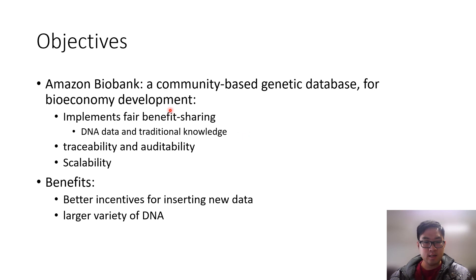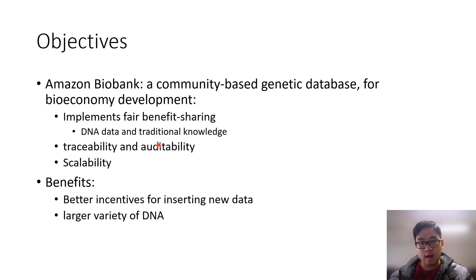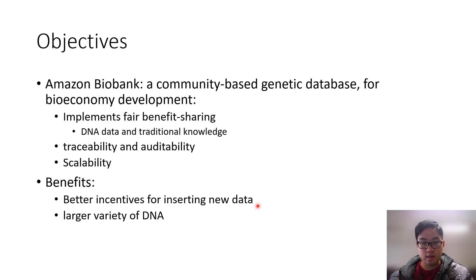The objective of our project is Amazon Biobank, a community-based genetic database to support bioeconomy development. Specifically, we implemented fair benefit sharing for both DNA data and traditional knowledge. We also implemented traceability and auditability requirements so that we can trace back who is the owner of the DNA data and who uses it to develop products. We have a scalability requirement because DNA data are typically very large, ranging from 100 gigabytes to terabytes. Thus, we aim to achieve better incentive for inserting new data, especially for local community members, resulting in a larger variety of DNA and improved support for biotechnological research.